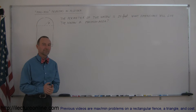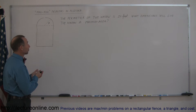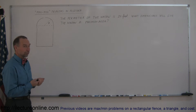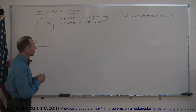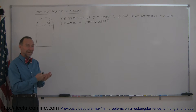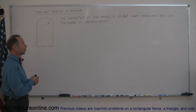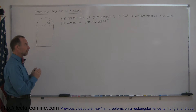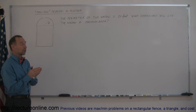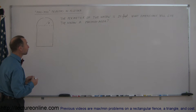Welcome to iLectureOnline. Here's another really good example of how you do max-min problems in algebra. Max-min problems — another way of saying max-min is maximum and minimum problems. The best way to do this usually is in calculus using derivatives, but if you end up with a quadratic equation, algebra is a really good way to do that. So here's a good example of how to apply that.